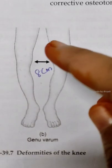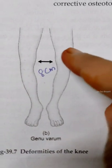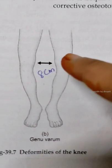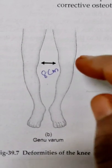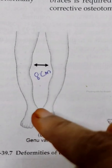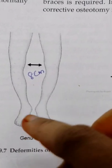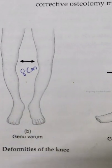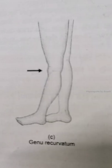Bow legs, genu varum. This is a condition where the knees are abnormally diverted and the ankles are abnormally approximated.